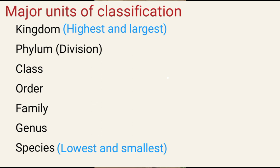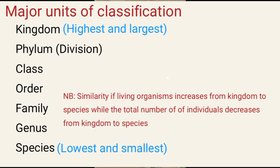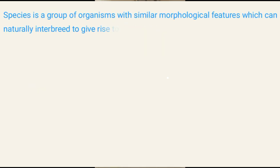The similarity of the organisms increases from kingdom to species, while the total number of individuals decreases from kingdom to species. Species is a group of organisms with similar morphological features, which can naturally interbreed to give rise to fertile offsprings.